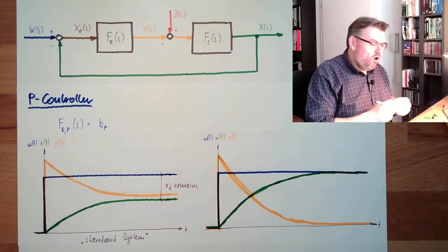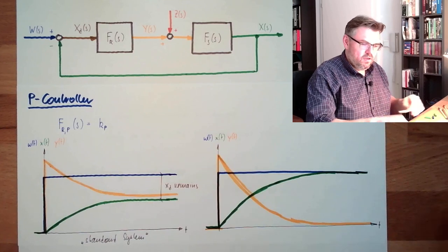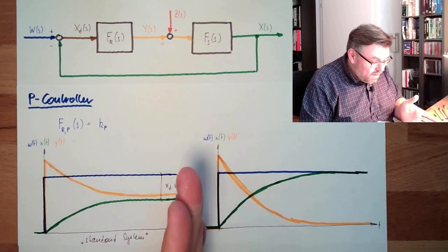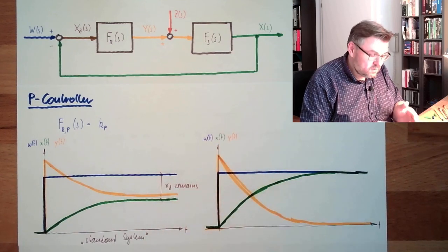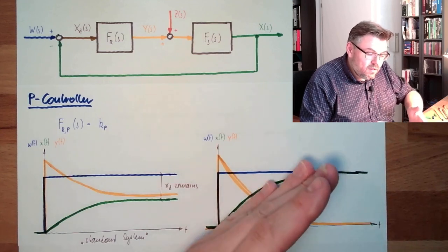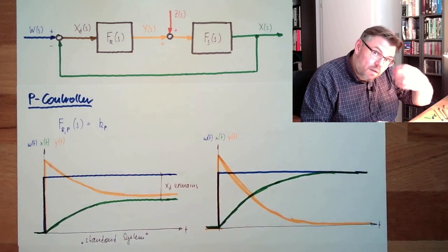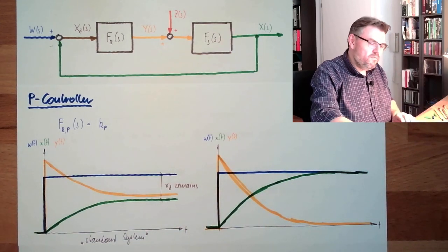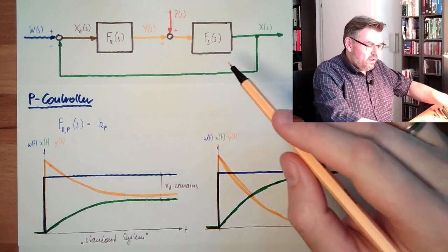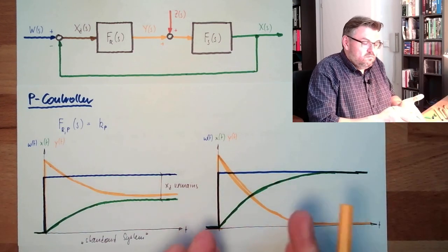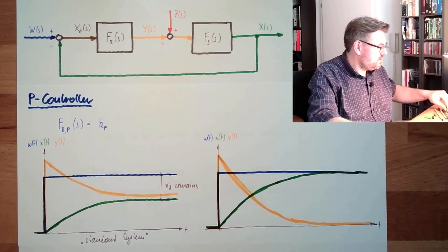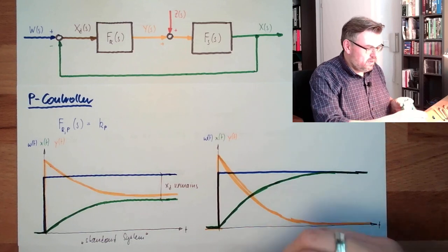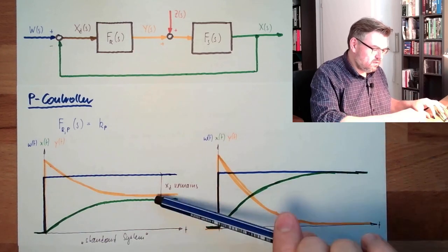So it depends, it strongly depends on the system. If you have a system which is integrating, summarizing all Y, so if it's the flow in, a bucket will summarize all the water flow inside. So it's an integrator, typical integrator. If you have a system with an integrating behavior, a P-control is good. So it's not bad by default that there is remaining control difference and so on. No, no, it depends on the system.